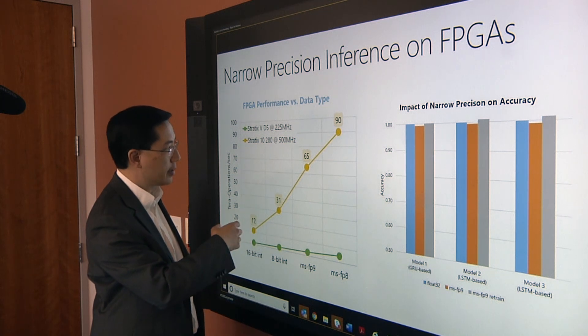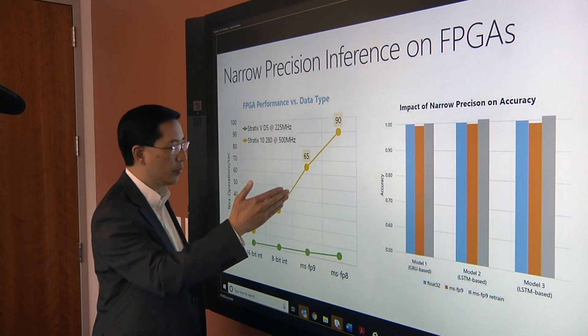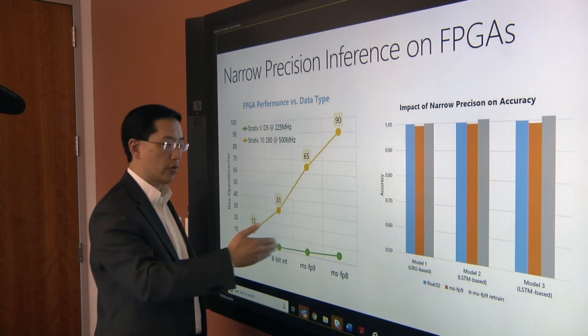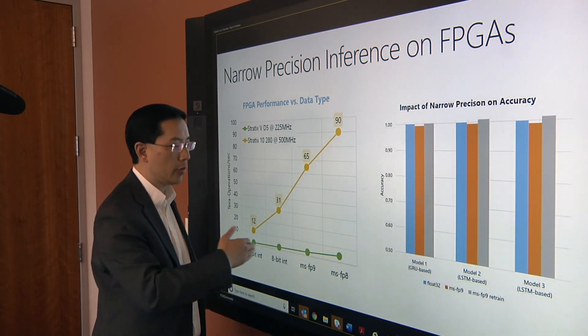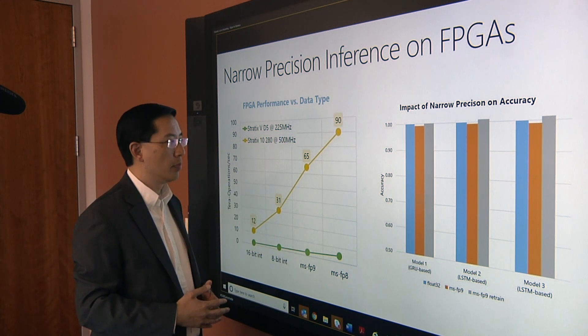And you can see that both implementations on the Stratix 5 and the Stratix 10, there were improvements in performance. In the case of the Stratix 5, there was about a little over a 3x improvement in performance. And in the case of the Stratix 10, they got the improvement above 7x.